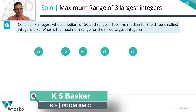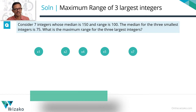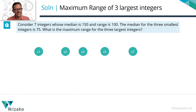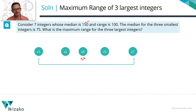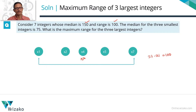Let's start with the first piece of information: the median of these seven numbers is 150. For seven numbers, the median is the fourth term from the left, so x4 equals 150 — first data plugged in. The range of these seven numbers is 100, so the gap between x1 and x7 is 100, or x7 minus x1 equals 100. Second data point captured.